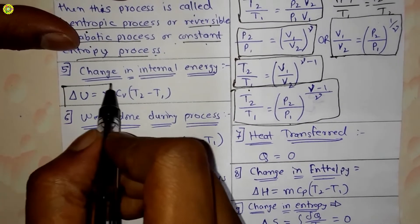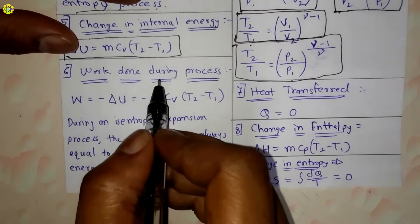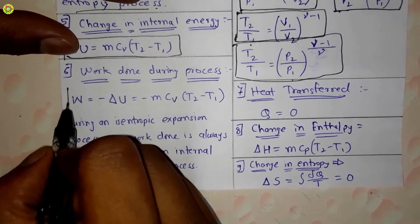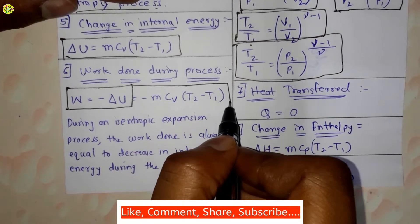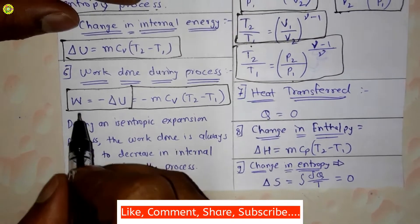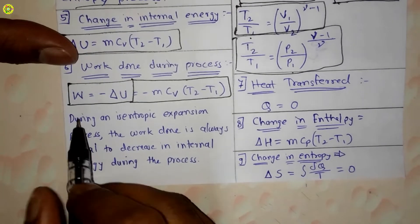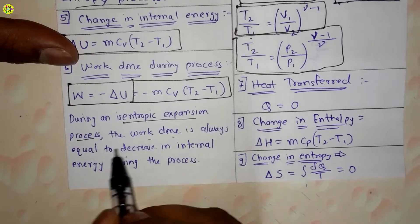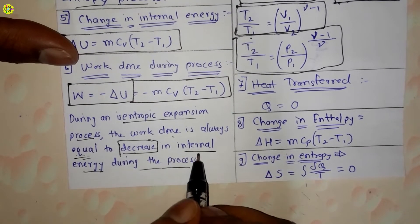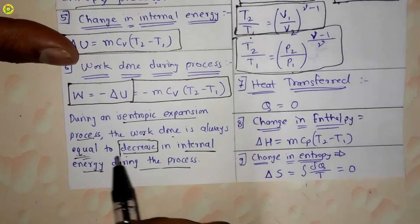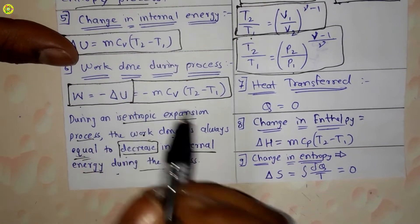The change in internal energy is given by delta U equals m Cv into bracket T2 minus T1. Work done is given by W equals minus delta U, that is minus m Cv into T2 minus T1. This is because during an isentropic expansion process, the work done is always equal to the decrease in internal energy.